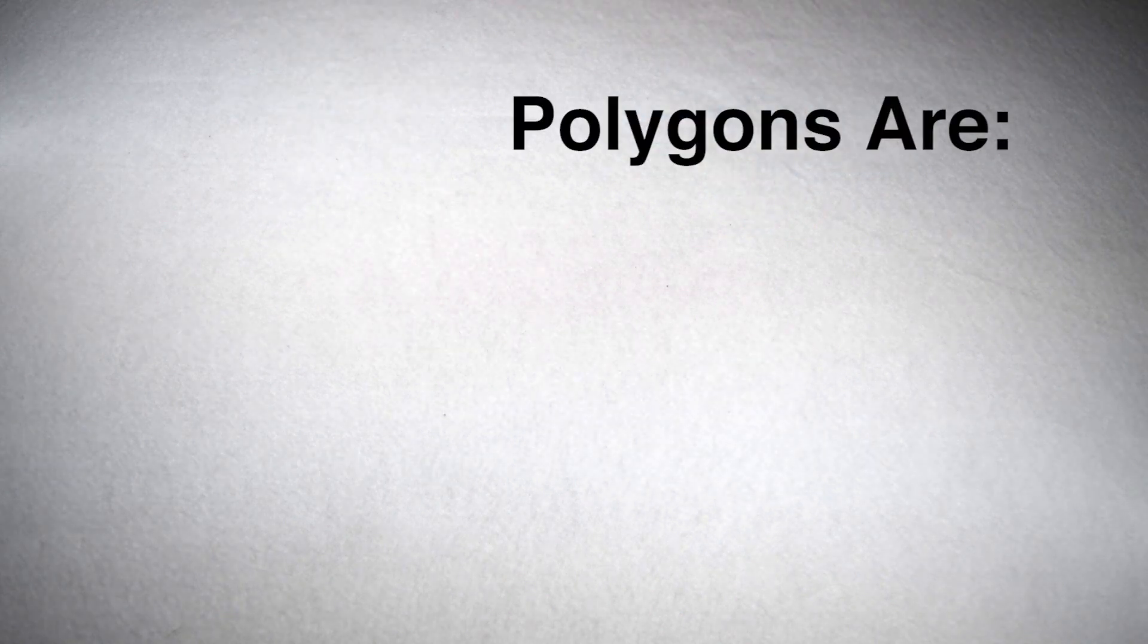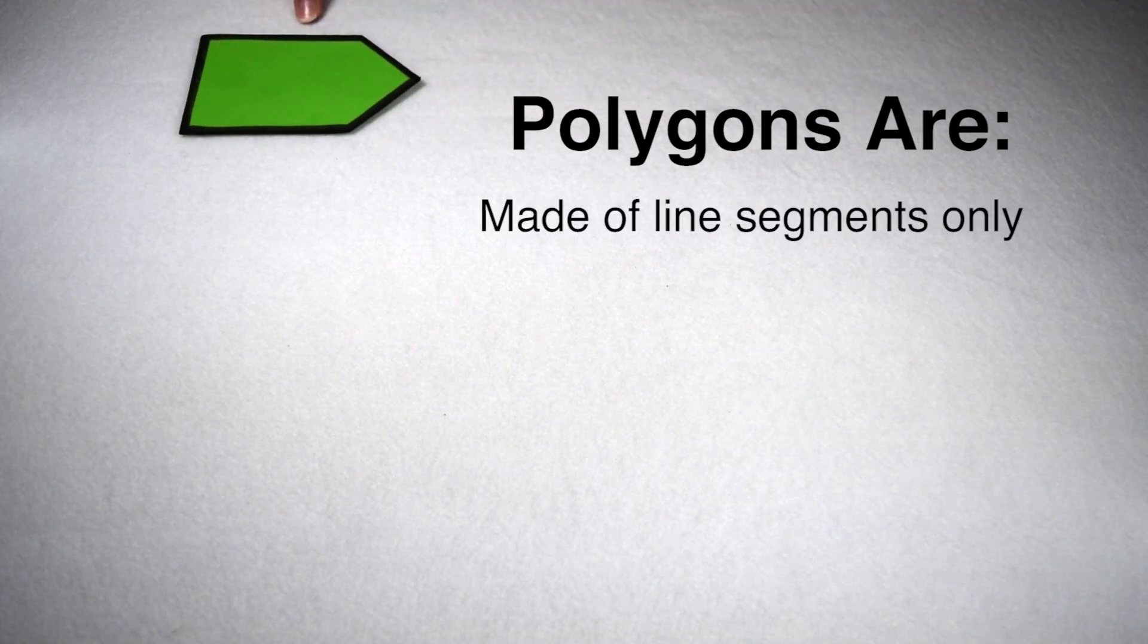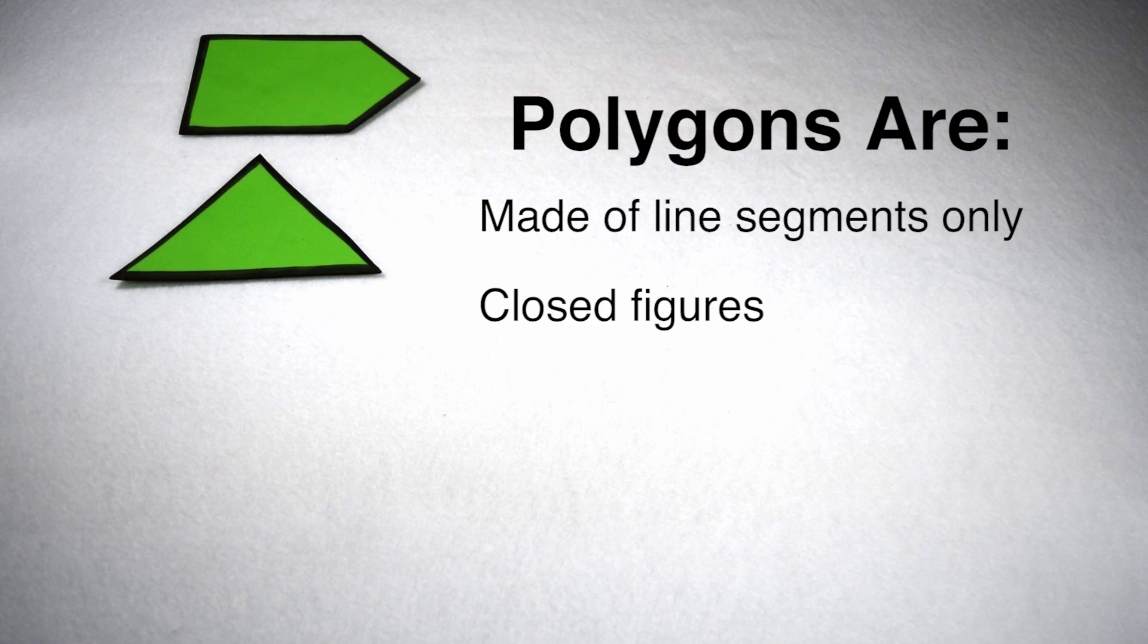In order to be a polygon, we have to check for several things. First off, we need to have line segments only, no curved edges. Secondly, our line segments need to meet at the end points to create a closed figure, meaning no way in or out.